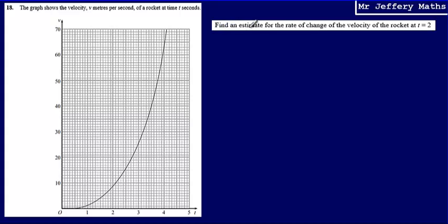Then what we're asked to do is find an estimate for the rate of change of the velocity of the rocket at t equals 2. So the first thing that we're going to do is translate what is meant by this term rate of change. And we can think of this as being the gradient. So essentially what we are being asked to do here is find out what is the gradient at t equals 2.